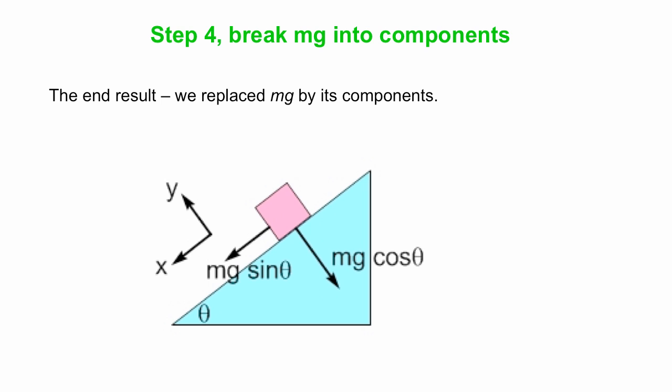So what we really have done is replaced mg by two components, mg sine theta, which acts down the slope, mg cosine theta, which acts into the slope.